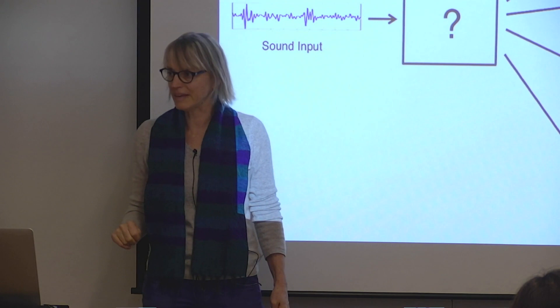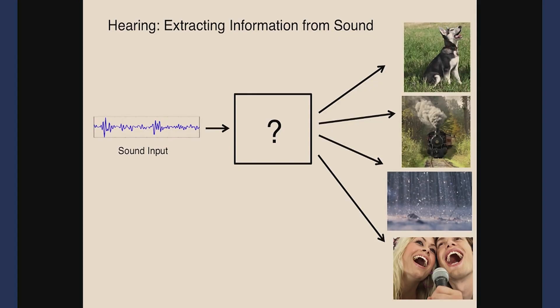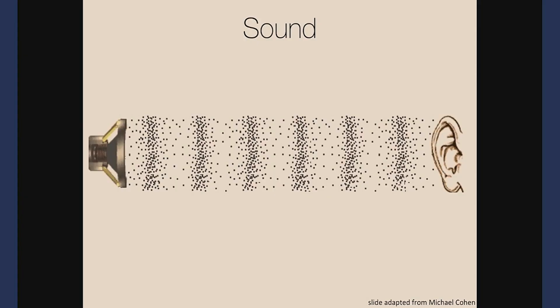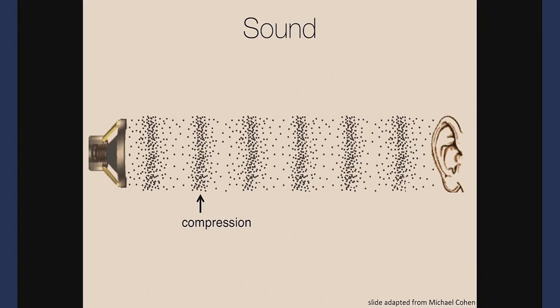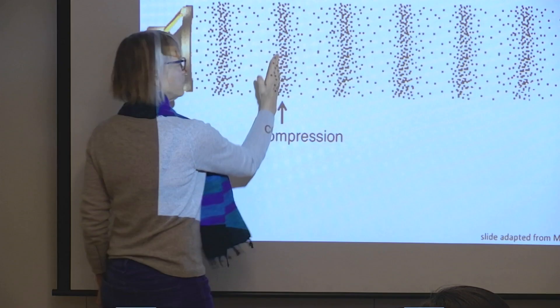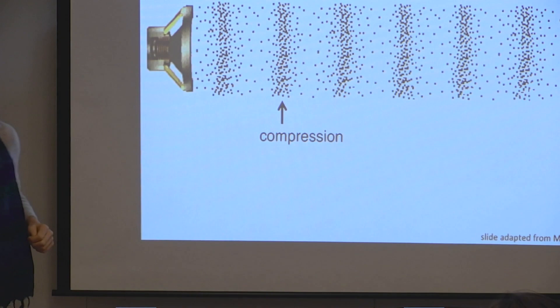Sound is just a set of longitudinal compressions and decompressions of the air coming from the source into your ear. These waves travel from the source to the ear in little waves of compression where the air is just compressed, and rarefaction where the air is spread out.